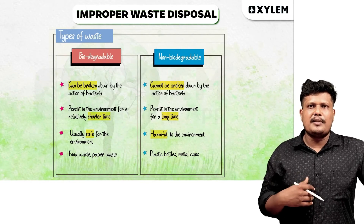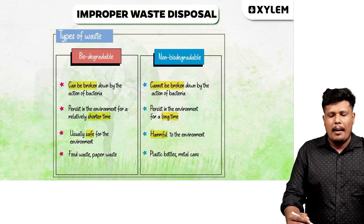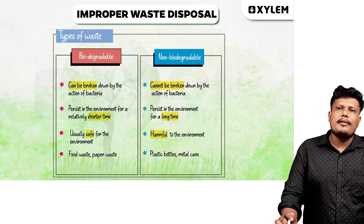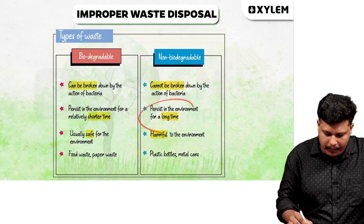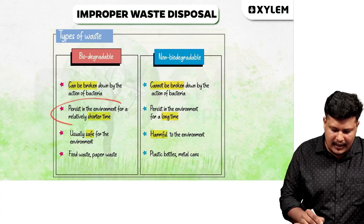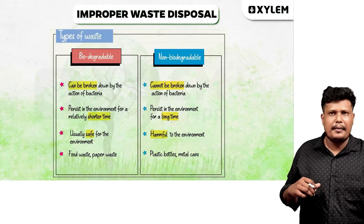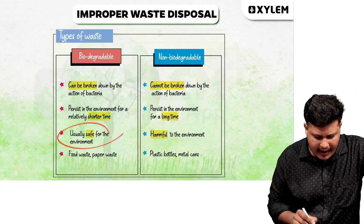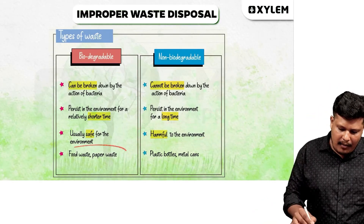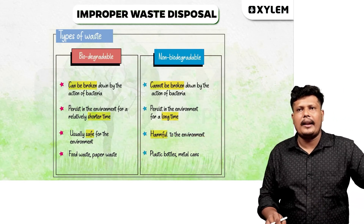Improper waste disposal: waste types are biodegradable and non-biodegradable. If it is biodegradable, the action of bacteria breaks it down. If it is non-biodegradable, like plastics, it cannot be broken down. Biodegradable waste includes food waste, paper waste, etc. Non-biodegradable waste includes plastics, metals, and glasses.